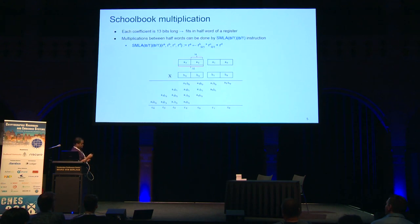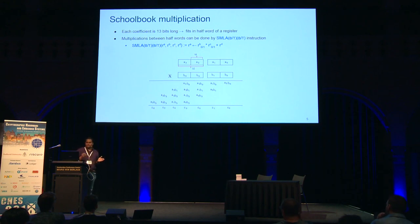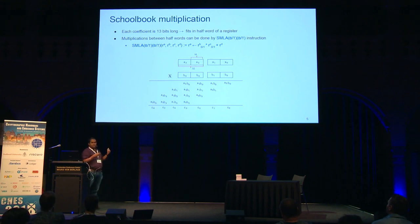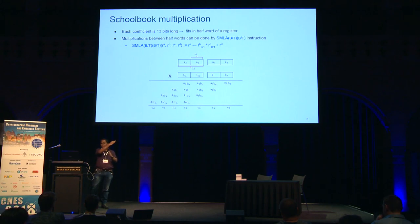For the Schoolbook multiplication: in our case each coefficient is 13 bits long, so it easily fits into the half-word of a register. In other words, each register can hold two coefficients. We have the DSP instruction SMLABT, which can operate on the half-words of a register — you can multiply the bottom half-word with the top, top with bottom, or in any combination.